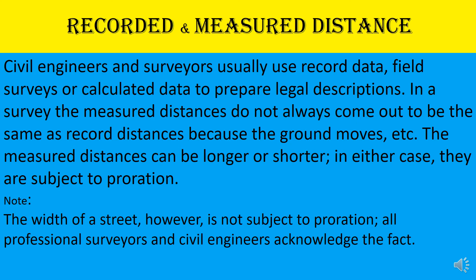Surveyors usually use record data and field survey data to calculate the bearing and distance of a property to prepare legal descriptions. In a survey, the measured distance may vary slightly from the record distance because the ground moves, and temperature also affects survey equipment. The measured distances can be longer or shorter; in either case, they are subject to proration.